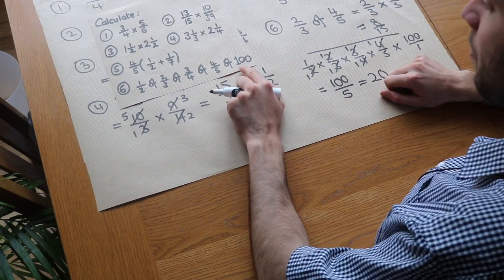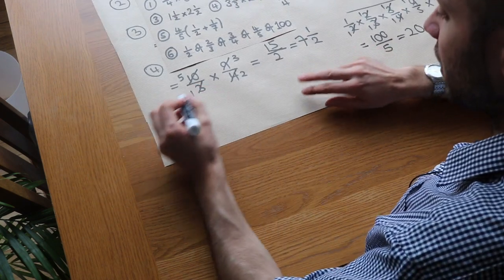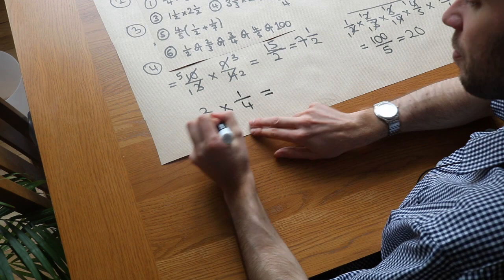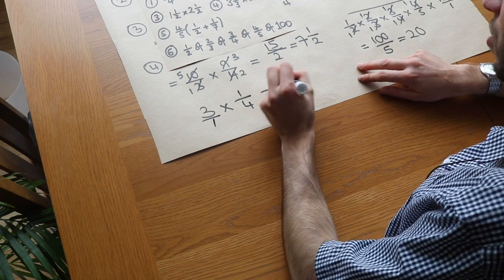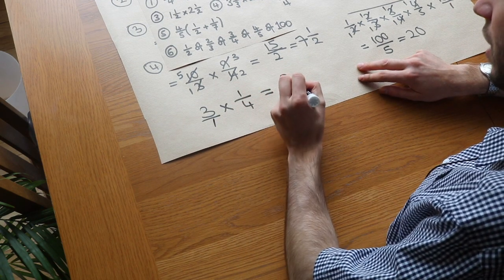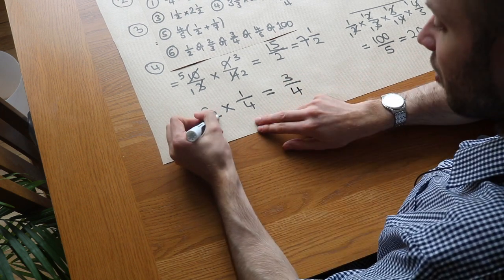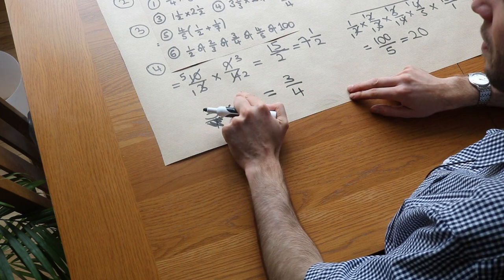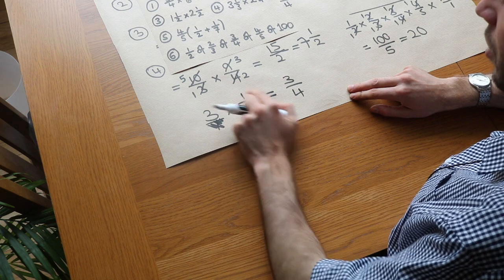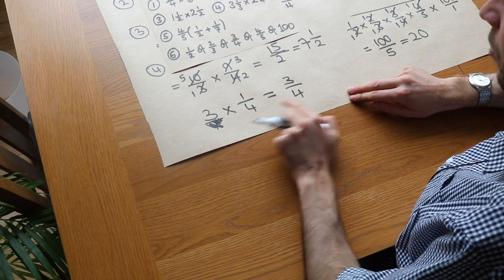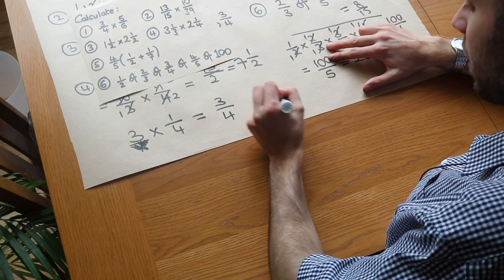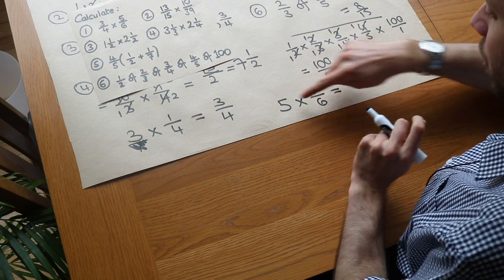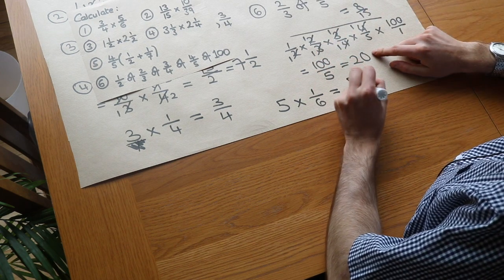Finally, when multiplying a whole number by a fraction, put the whole number over 1. For example, 3 times a quarter becomes 3 over 1 times 1 over 4, giving 3 over 4. In general, the whole number only affects the numerator — so 5 times 6 sevenths would just be 30 sevenths; you only multiply the top by 5.